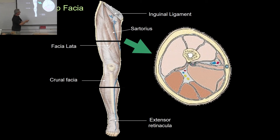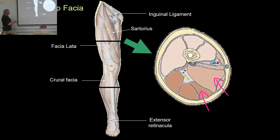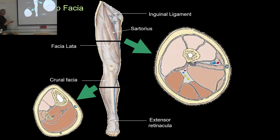If we cross-section the thigh we get this large chunk — the femur in the middle, the quadriceps anteriorly, the hamstrings posteriorly, and the blue, yellow, and red dots representing blood vessels and nerves. Similarly, cross-sectioning the leg gives us the tibia and fibula. One important thing to notice is how much more anterior the tibia is compared to the fibula in mid-section — this will become important when we start doing images of the knee.